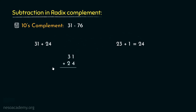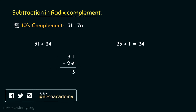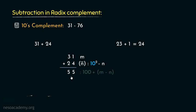Let's perform the addition now. 1 plus 4 is 5 and 3 plus 2 is also 5. So if we consider 31 as m, then 24 is naturally the 10's complement of n, obtained by performing 10 squared minus n. Therefore, the result 55 is actually 100 plus m minus n.